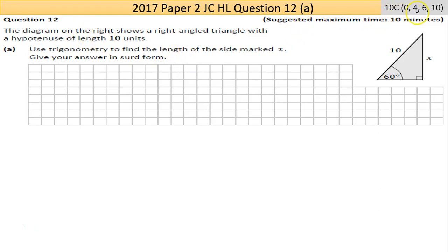Question 12 here is worth 10 marks. There's a chance to pick up marks here no matter what. The diagram on the right shows a right-angled triangle, so either Pythagoras or the trigonometric ratios. The hypotenuse, the longest side, has a length of 10 units.